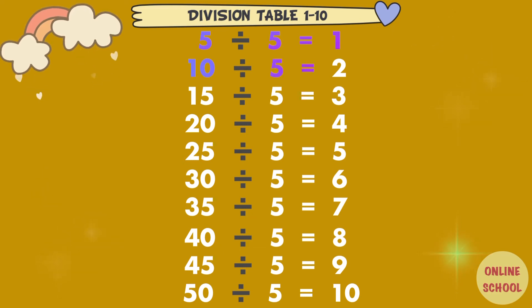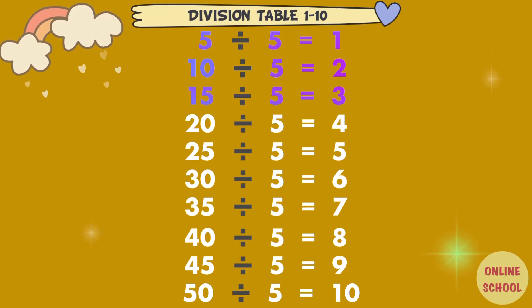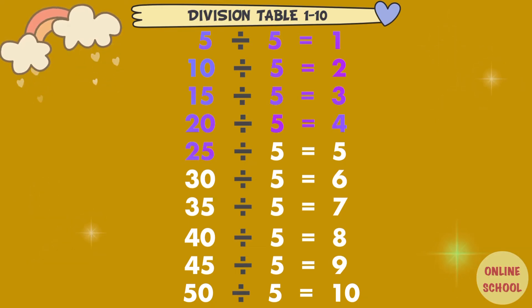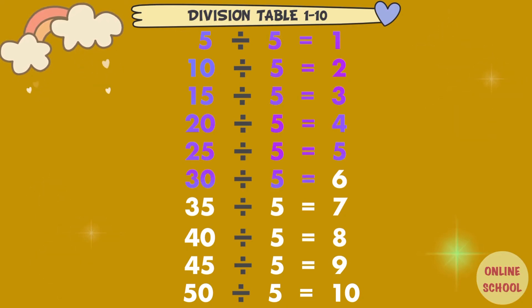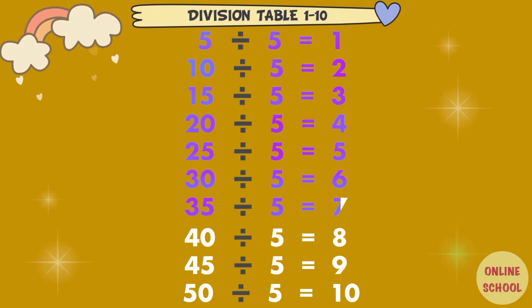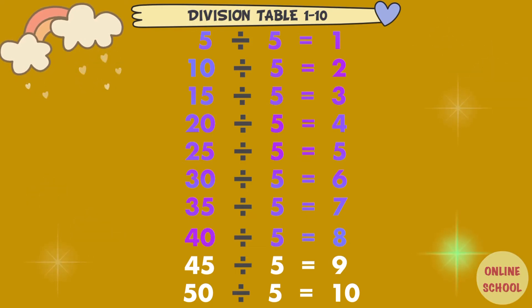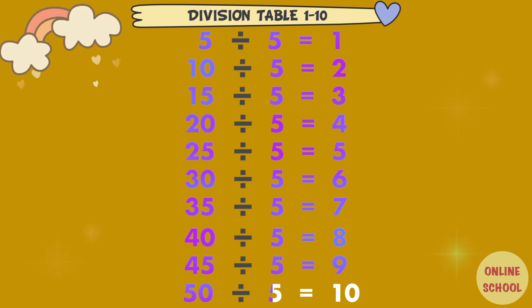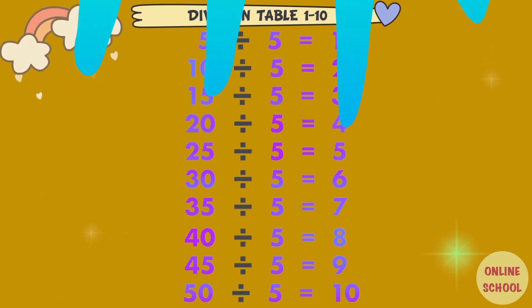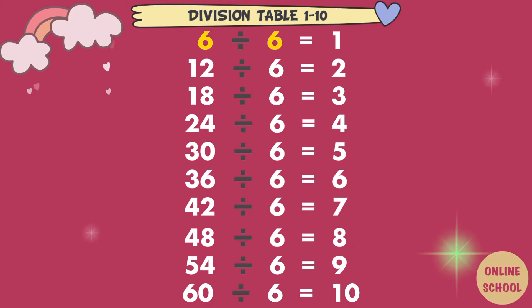10 divided by 5 equals 2. 15 divided by 5 equals 3. 20 divided by 5 equals 4. 25 divided by 5 equals 5. 30 divided by 5 equals 6. 35 divided by 5 equals 7. 40 divided by 5 equals 8. 45 divided by 5 equals 9. 50 divided by 5 equals 10. Divided by 6.